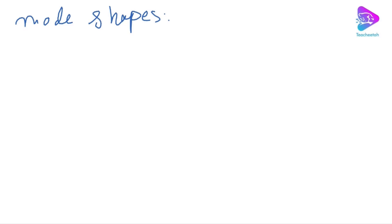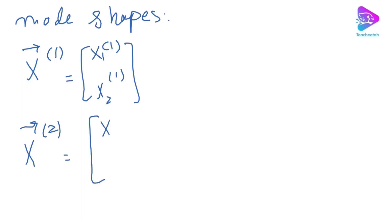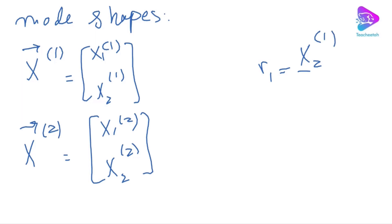We then define the mode shapes, or modal vectors. For the first mode we have the vector [x11, x21] and for the second mode [x12, x22], where these are the amplitudes. We define amplitude ratios r1 = x21/x11 and r2 = x22/x12 for the first and second mode shapes respectively.